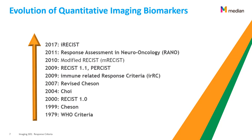Here we show the evolution of quantitative imaging biomarkers and criteria over time. The first was the WHO criteria. Since 1979, the evolution of criteria has been geared towards improvement of criteria in the same organ, or for a specific pathology or therapy. The latest criteria is the iRECIST criteria for immuno-oncology, published in early 2017. While it is still not validated by the FDA, it was tested by the same team that validated RECIST 1.1.